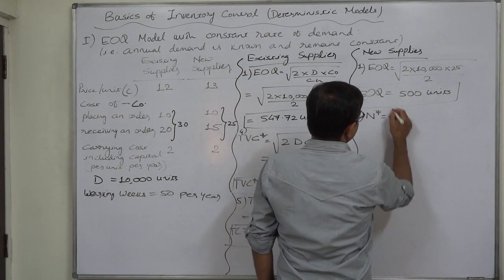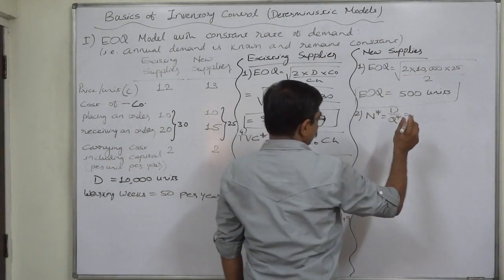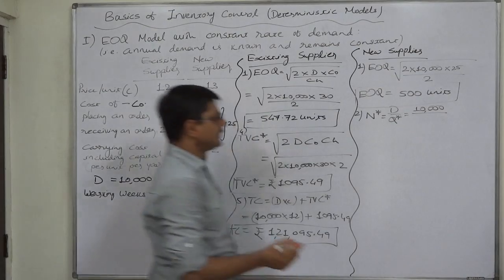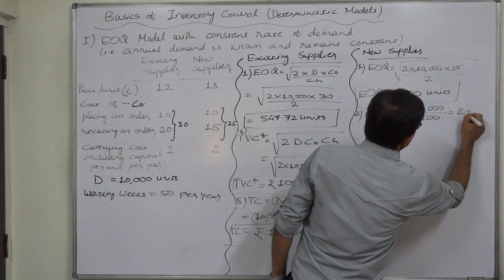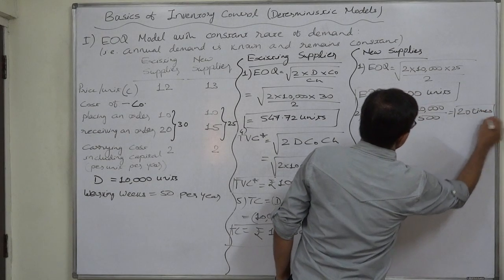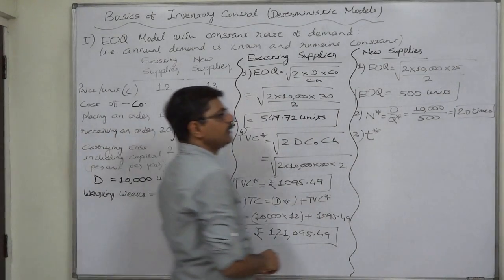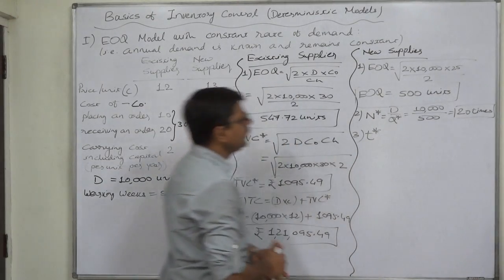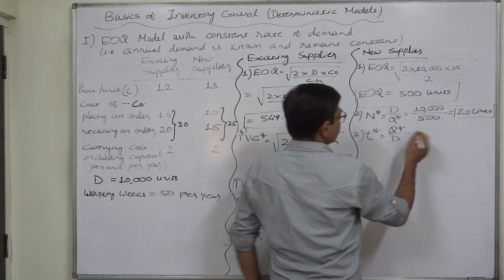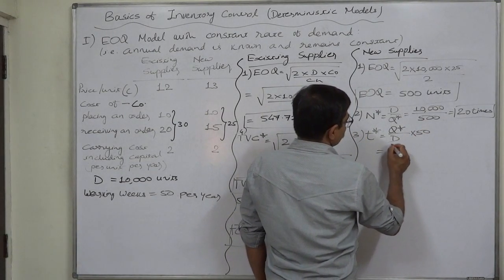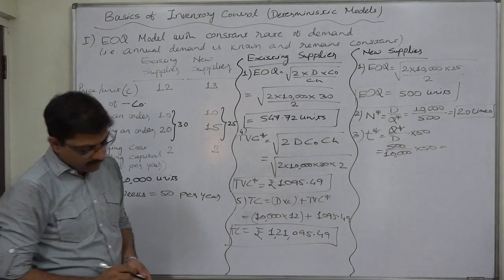Hence the N star will be somewhat easy: D by Q star. We believe that Q star ordering quantity is exactly equal to EOQ, and it is also suitable in this case. I think very first time we have found this type of quantity, otherwise it is always in terms of fraction: 10,000 divided by 500, so 20 times, we have to make order 20 times a year. Number three, T star, optimal cycle or say gap between two consecutive orders, if we take the ordering quantity exactly equal to EOQ, that will be Q star divided by D. It is in terms of units, let us multiply it with number of working weeks. So 500 divided by 10,000 into 50: it will be 2.5 weeks exactly. The gap between two consecutive orders will be 2.5 weeks.